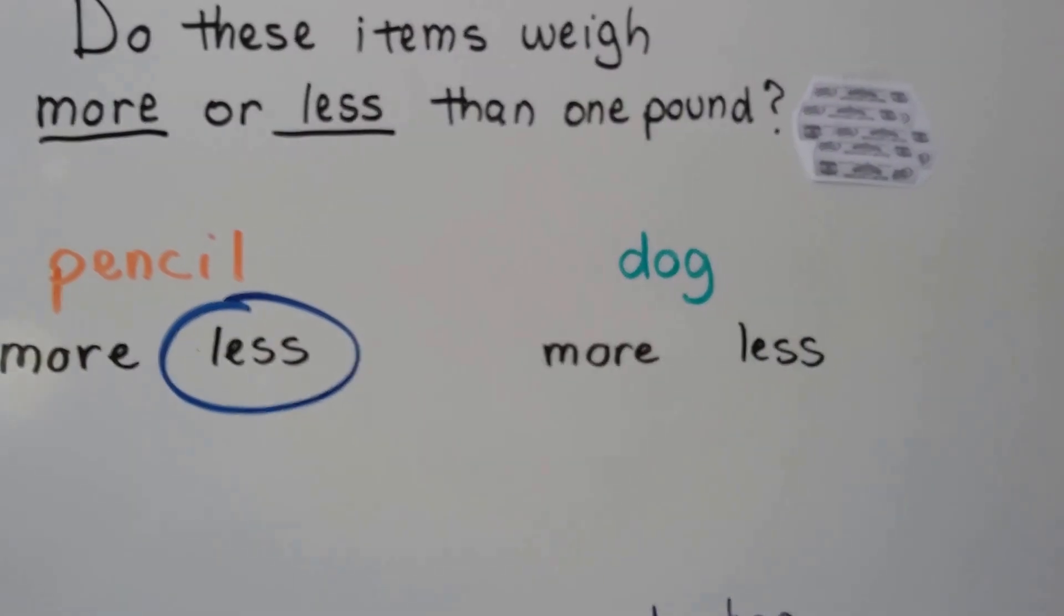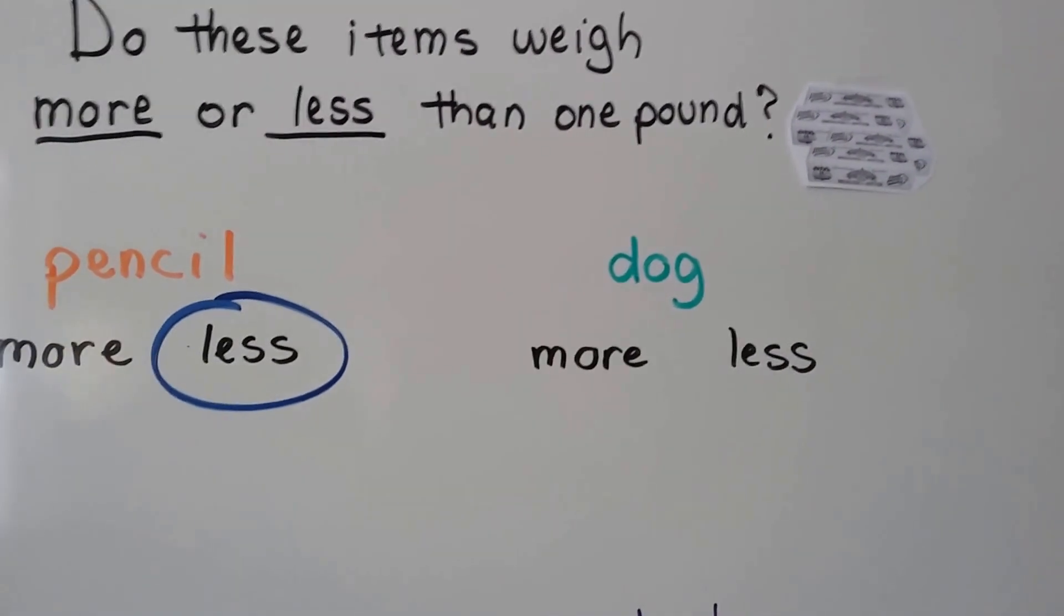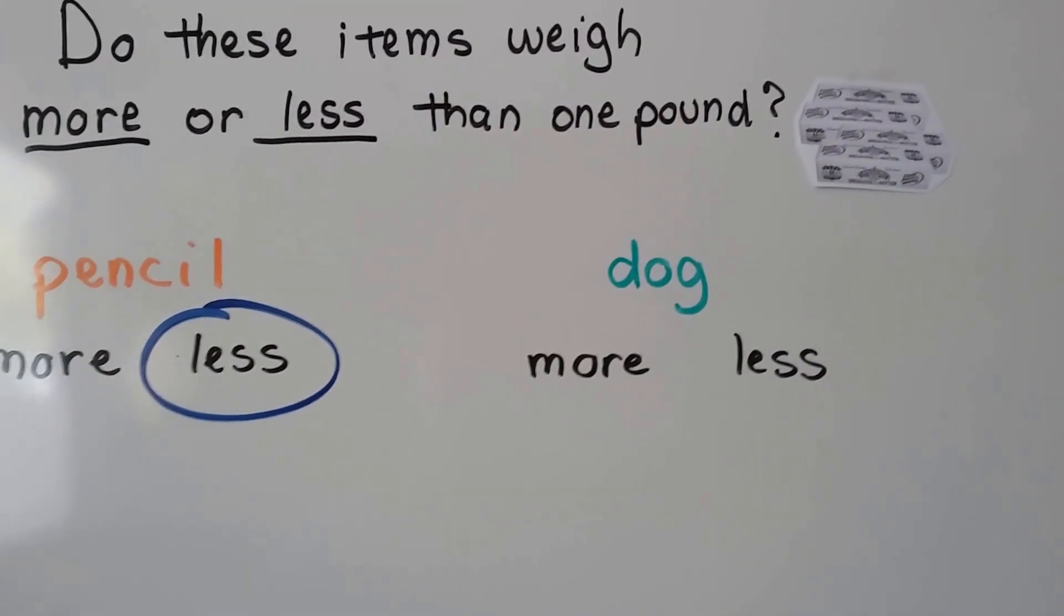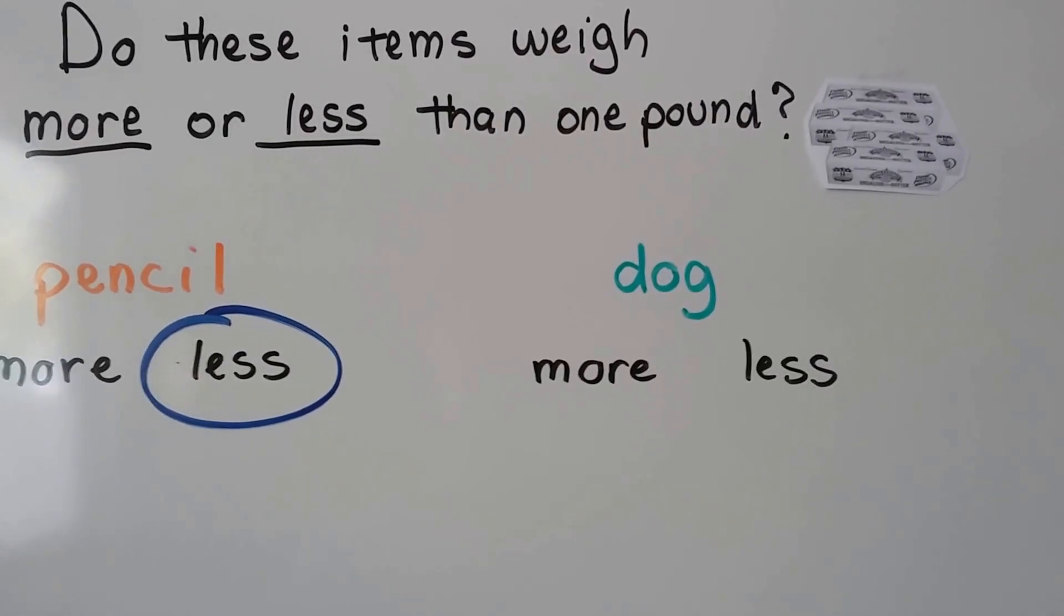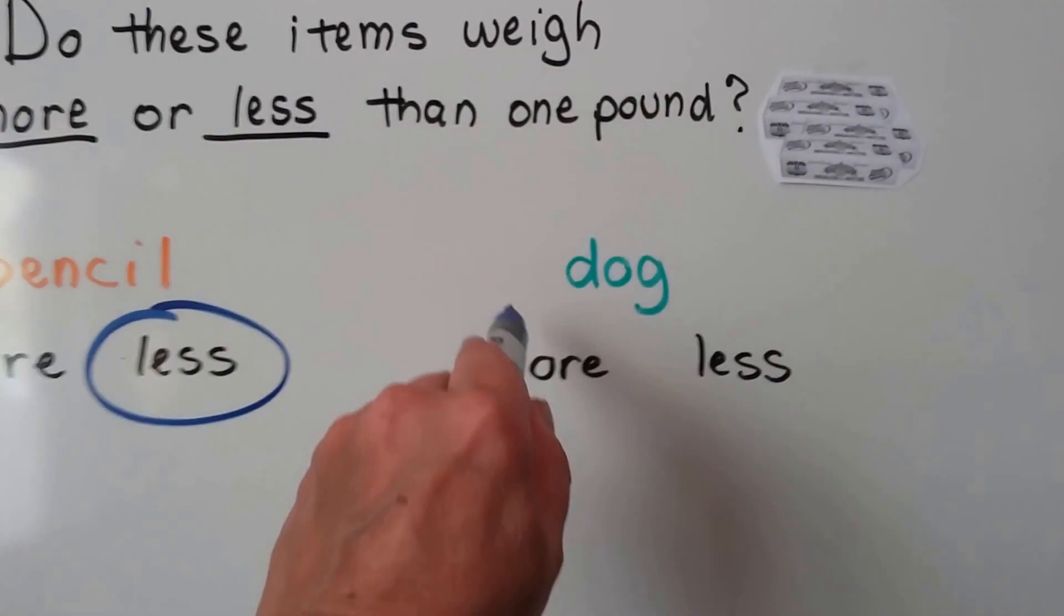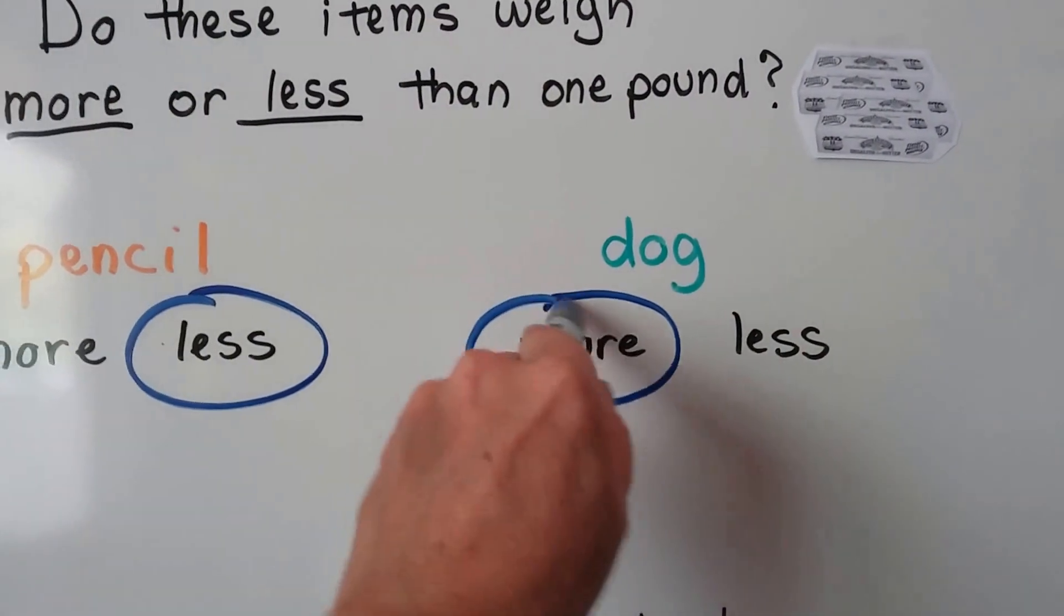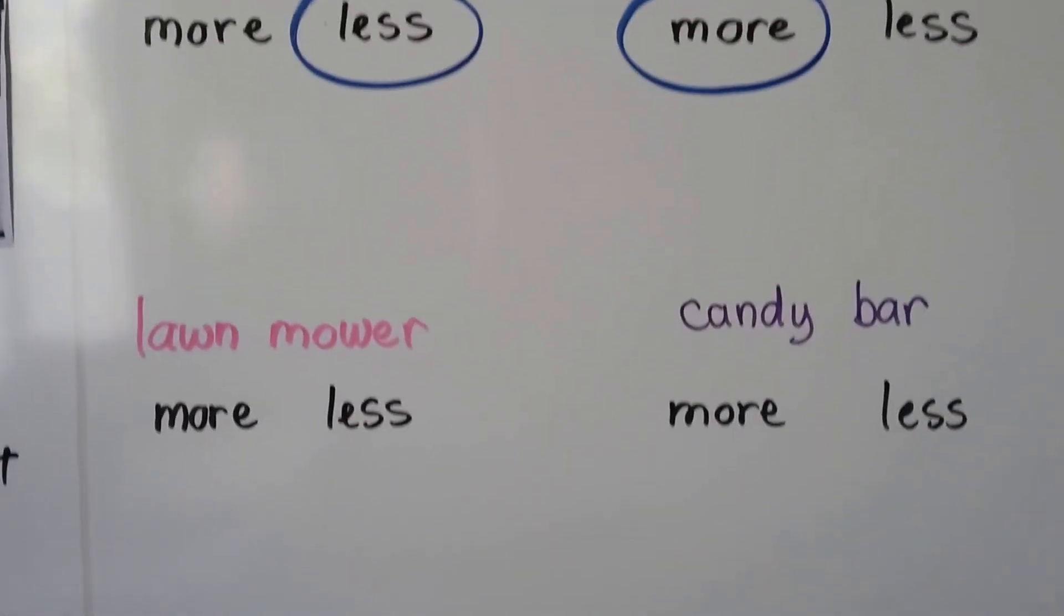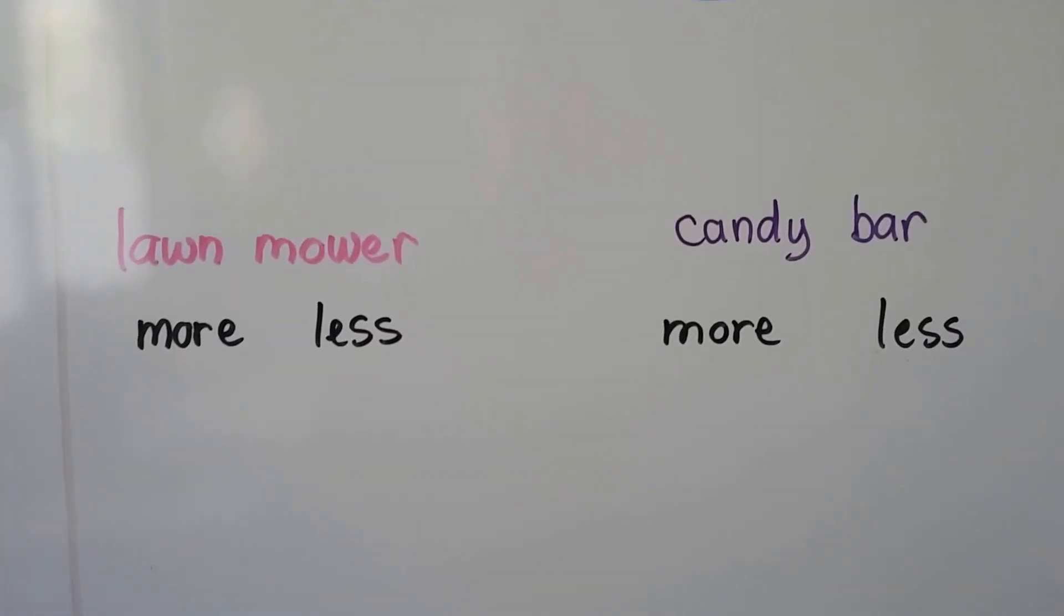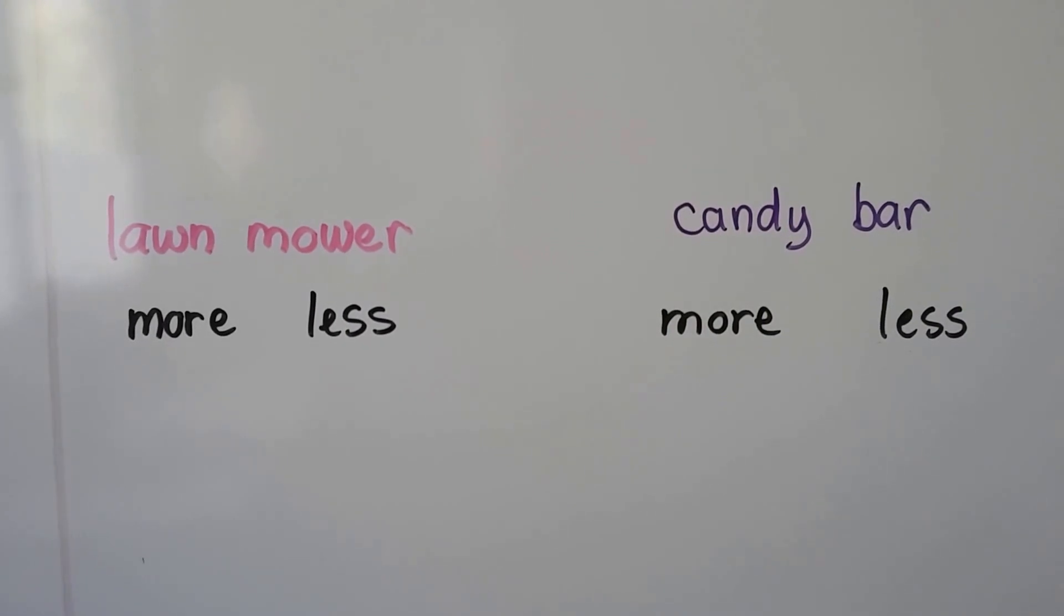Do you think a dog would weigh more or less than one pound? Dogs can get pretty heavy. Even small dogs would be more than a pound. How about a lawnmower? Is a lawnmower more or less than one pound? Remember, one pound is about four sticks of butter.